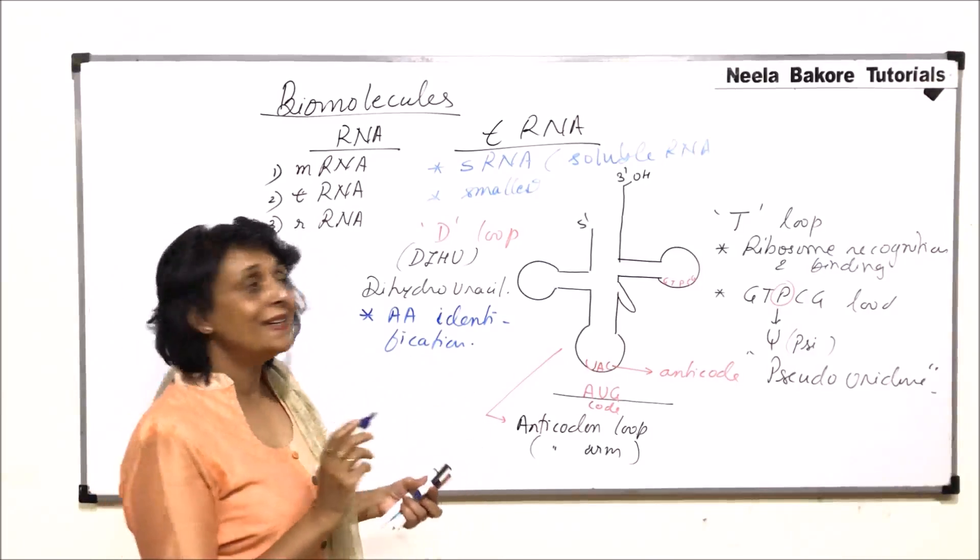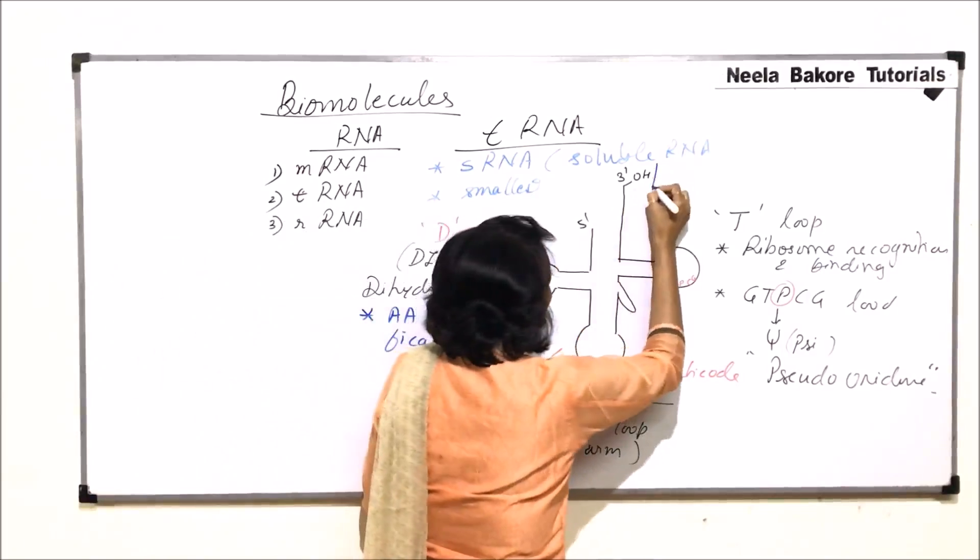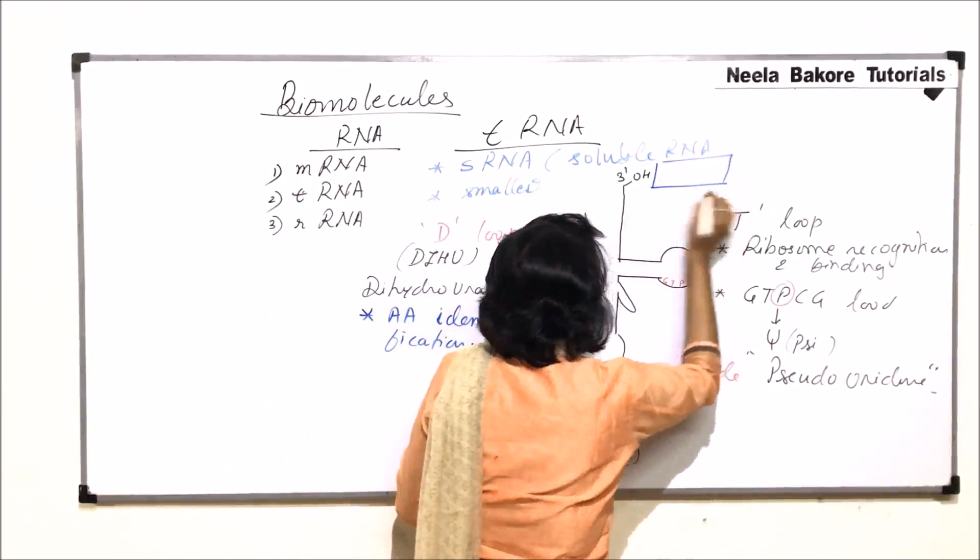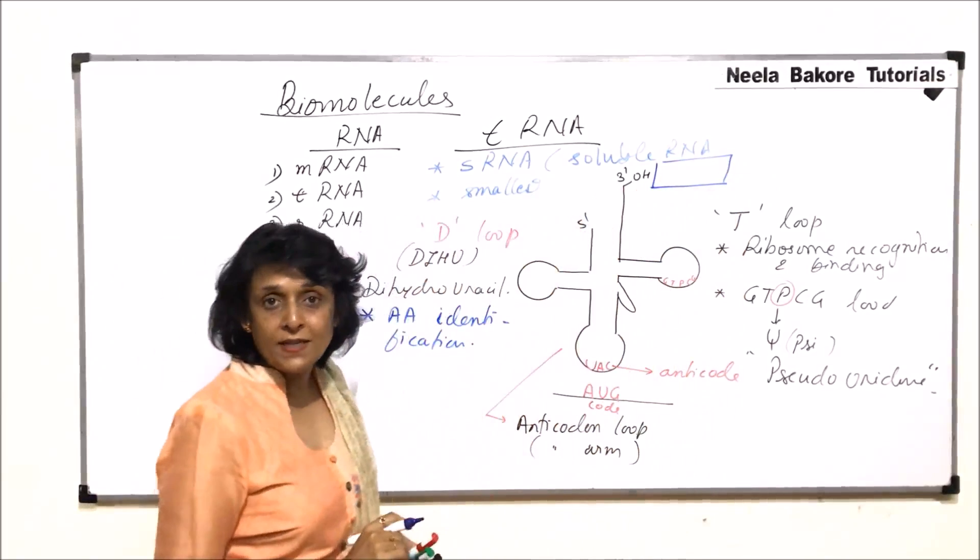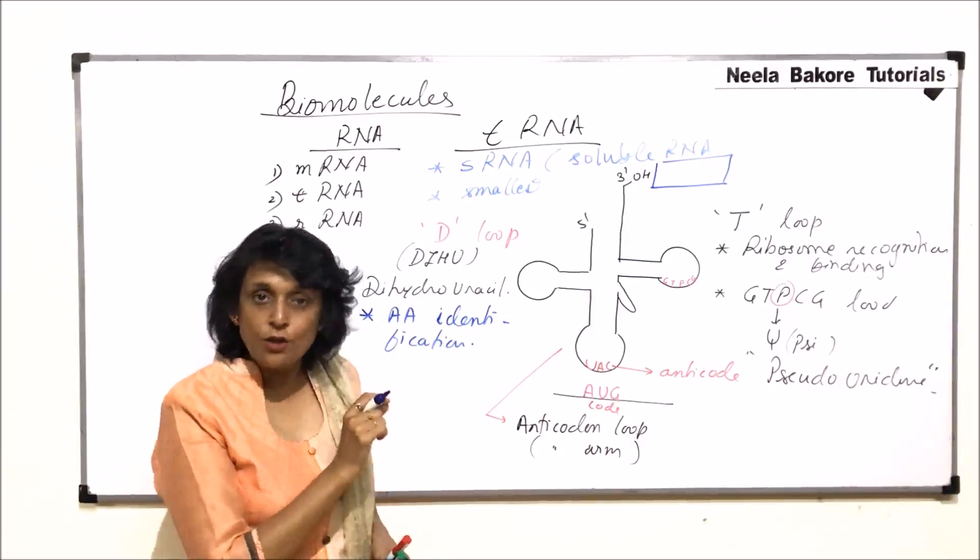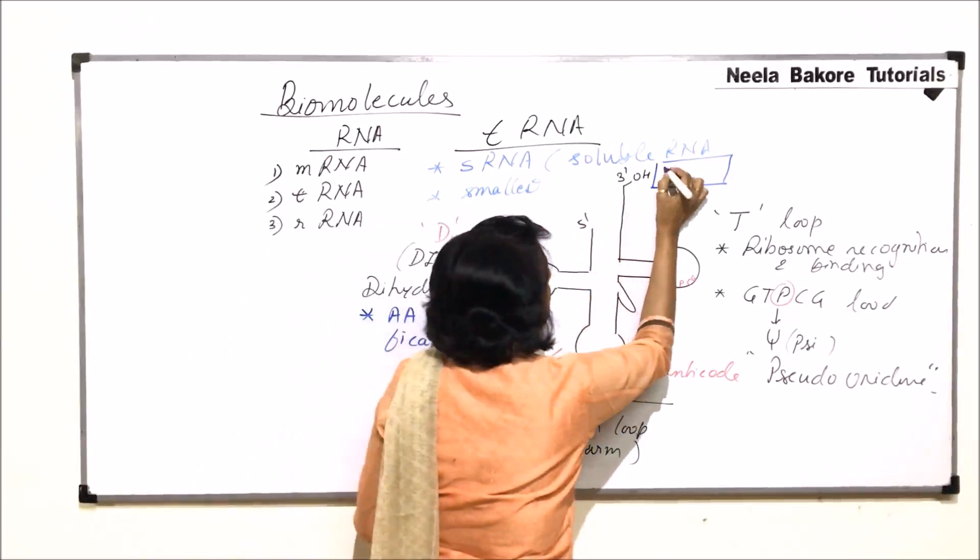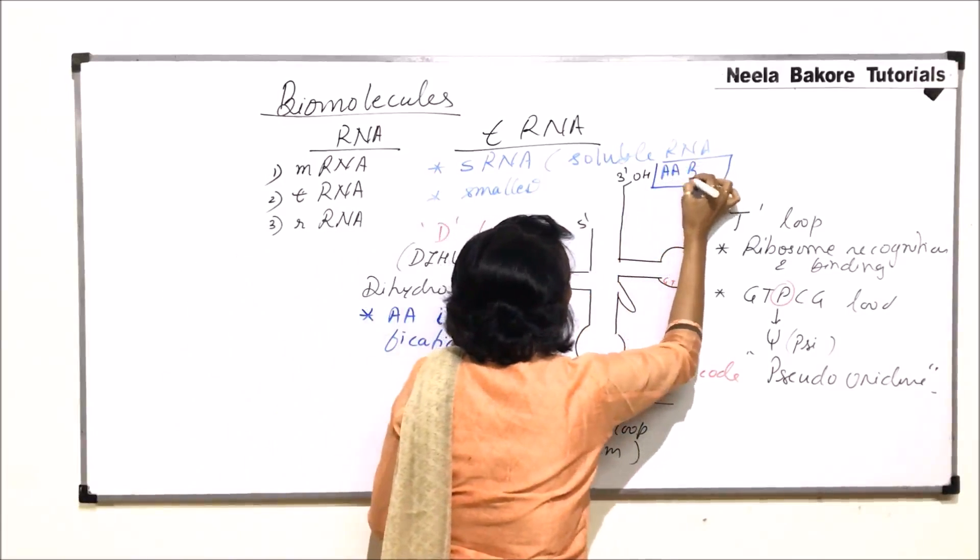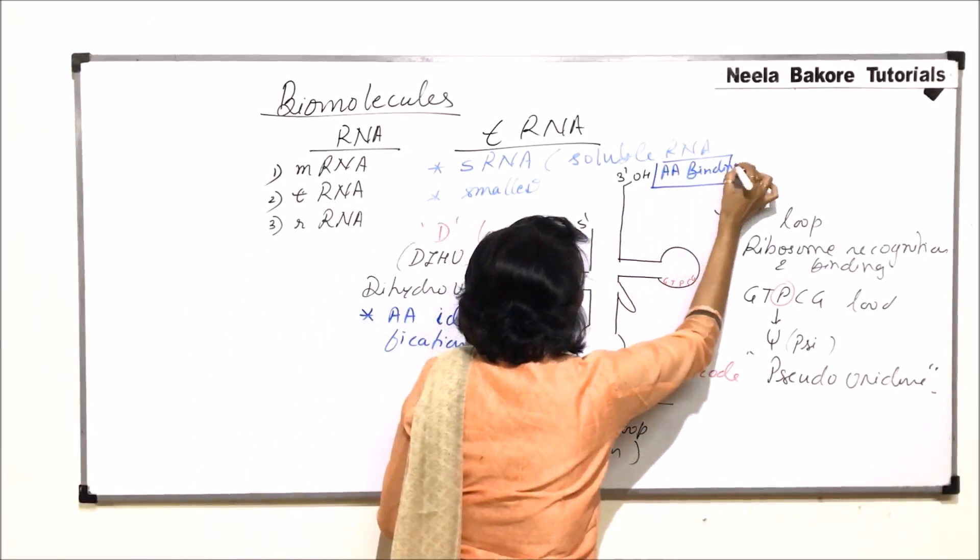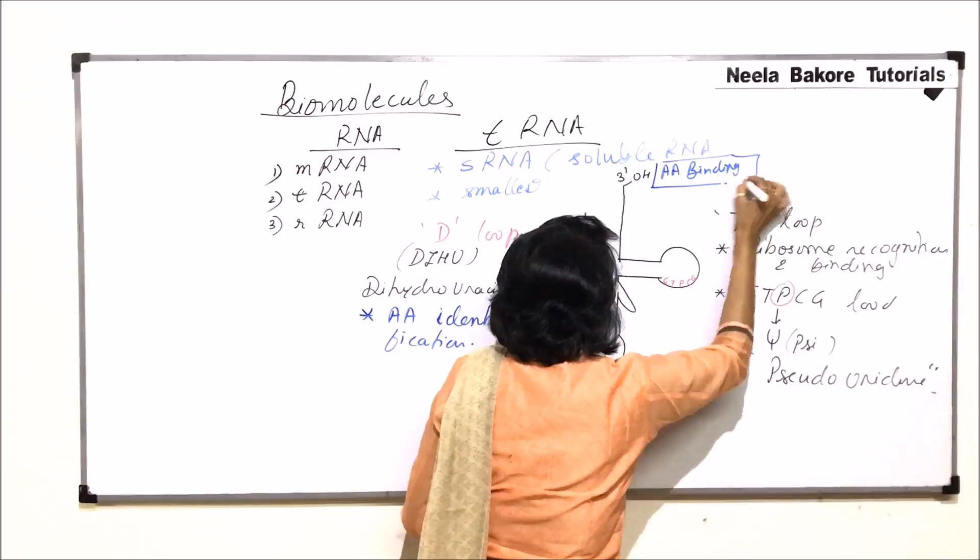But where is this amino acid actually going to bind? Here it has just identified or recognized that amino acid. So amino acid binding site is different. Amino acid binding site is here where OH is present. So third carbon which has OH functional group, this is the place where amino acid binds. So we call it amino acid binding site.